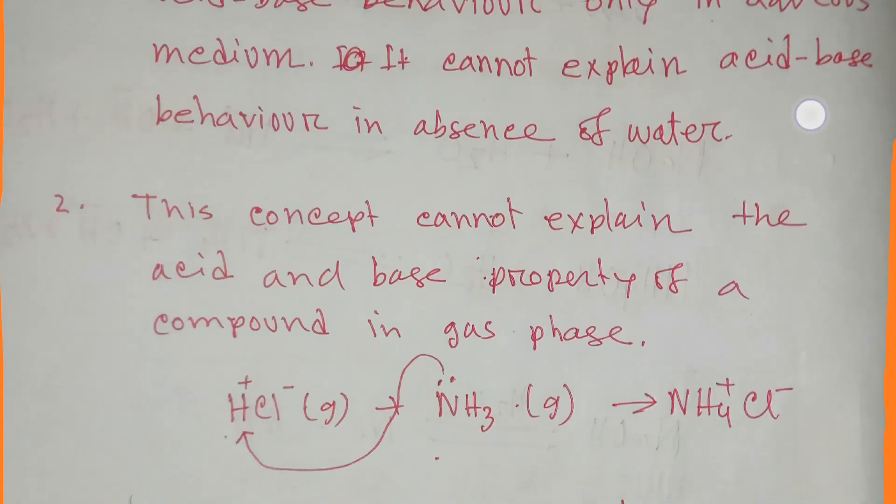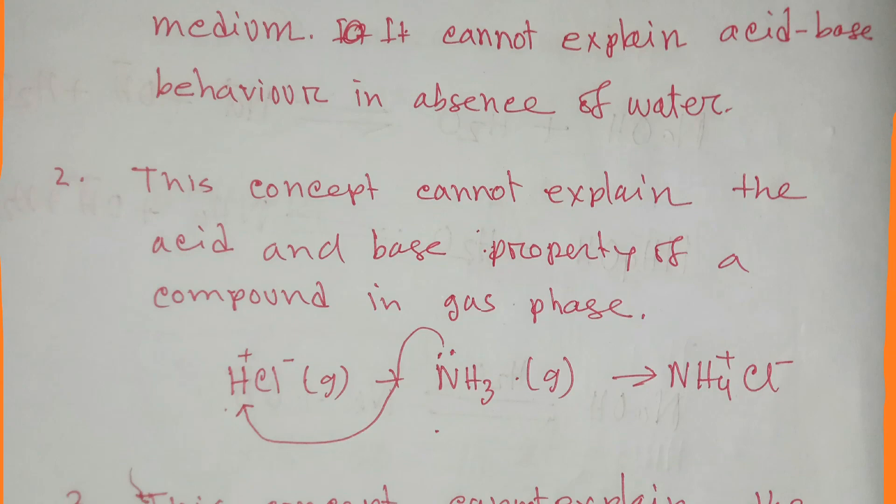The second limitation is that this concept cannot explain the acid and base property of a compound in gaseous phase. You know that HCl is in gaseous phase and ammonia is in gaseous phase, and by reacting with each other they are producing ammonium chloride which is salt.